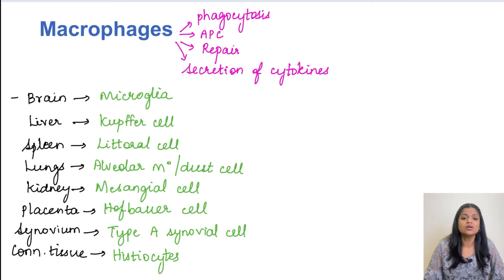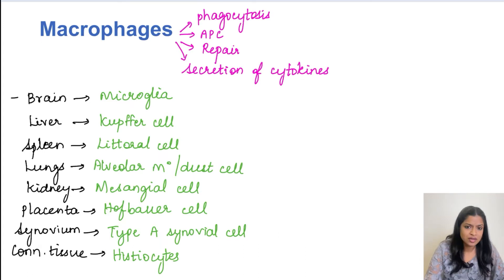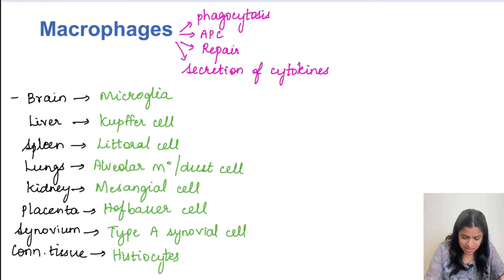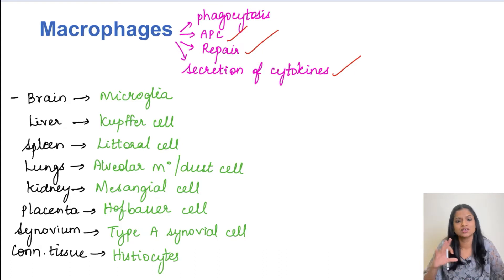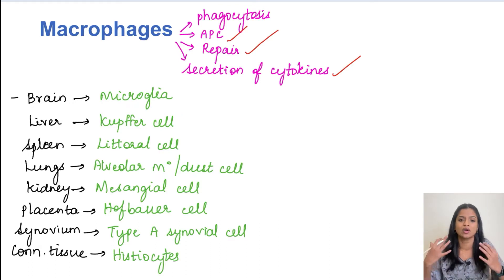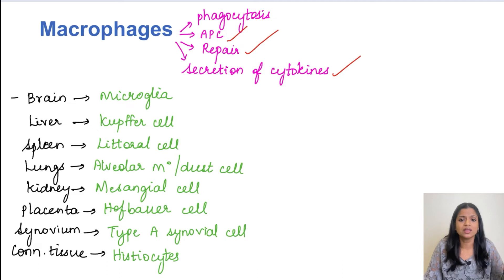The cells involved in chronic inflammation start with macrophages. The main function of macrophages is phagocytosis, but they also act as antigen presenting cells, are involved in repair, and secrete cytokines to maintain inflammation. Macrophages are derived from bone marrow monoblasts, circulate as monocytes in peripheral blood, and once they enter tissue they are called macrophages. Monocytes have a lifespan of 1 to 3 days, but macrophages can sustain for years.